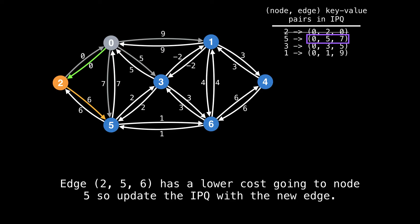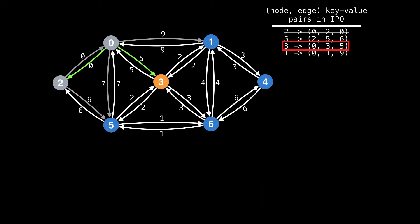The edge to five via six has a better cost going to node five than the edge from node zero to node five with a cost of seven, so update the index priority queue with this new edge. I will denote IPQ updates with a purple box around the edge being updated. The next best node-edge pair is node three with the edge coming from node zero with a cost of five. Iterate through all edges of node three and relax all edges. The edge coming from node three offers a better value, so I update the value for node one. Then add a new key-value pair entry for node six, and update the value for node five with the new better edge found. From this point on I will let the animation play — please try and follow along.